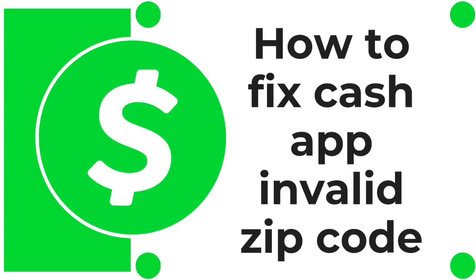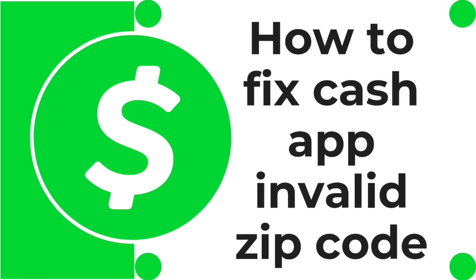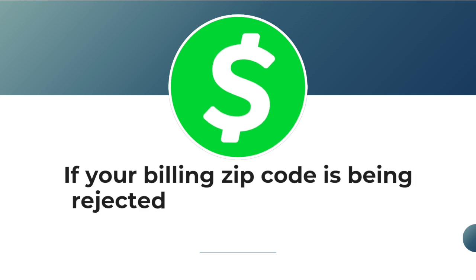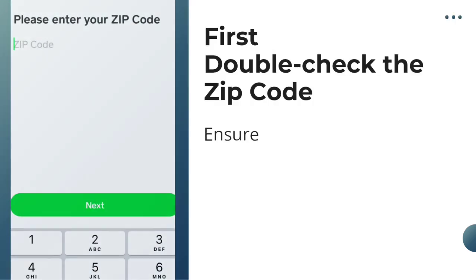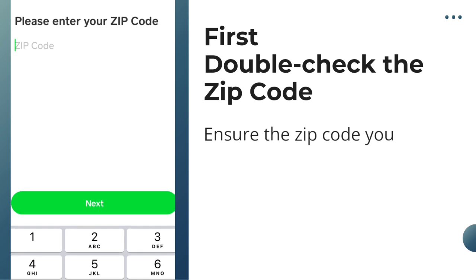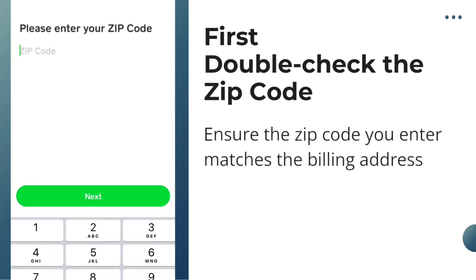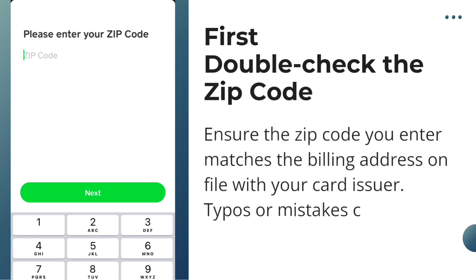How to Fix Cash App Invalid Zip Code. If your billing zip code is being rejected on Cash App, try the following steps. First, double-check the zip code. Ensure the zip code you enter matches the billing address on file with your card issuer. Typos or mistakes can cause rejections.